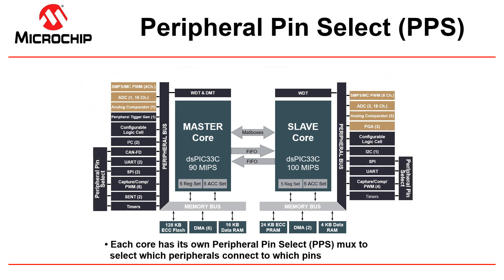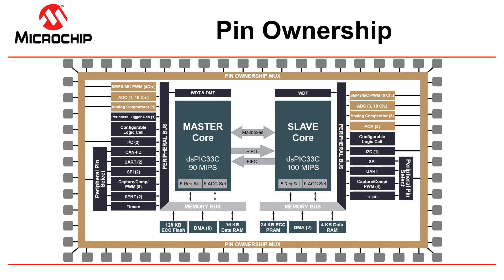Like other DSPICs, the dual core family features the peripheral pin select, or PPS, capability, allowing each core to select the peripheral signal connection to the external I/O pins. Additionally, the dual core devices have another layer of muxing called the pin ownership mux, which allows the user to assign a particular physical pin ownership to either of the cores.